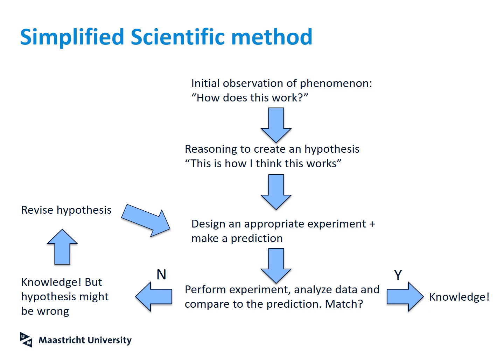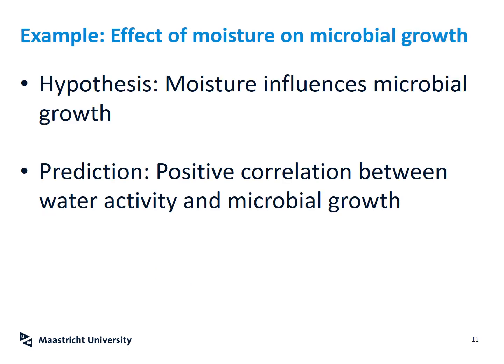You design an experiment and make a prediction: if I do this experiment, I can prove that my hypothesis is correct and the data will look like this. If the data do match the prediction, you build evidence that your hypothesis was correct and gain knowledge. However, if the data don't match the prediction, that's also science. It can mean your hypothesis was wrong or your experiment was wrong, so you redesign and try again. If it still doesn't match, you revise your hypothesis and repeat the process.